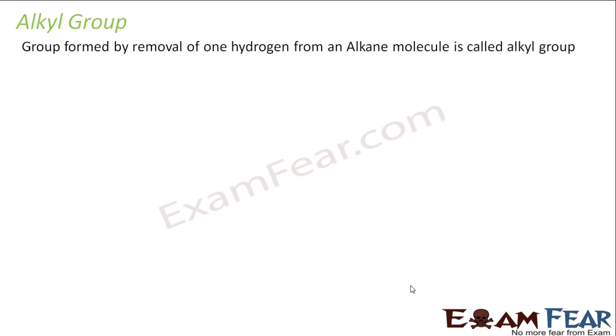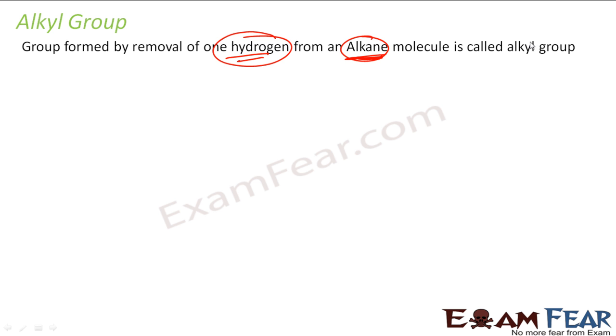Now let's study alkyl groups. Before we study the nomenclature of all the carbon compounds, it is critical to know the alkyl groups. What are alkyl groups? If you remove one hydrogen from alkane — note, from alkane, not from alkene or alkyne — you get an alkyl group.